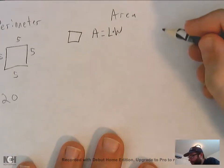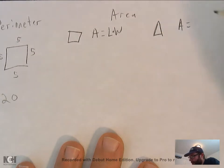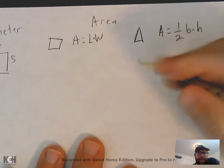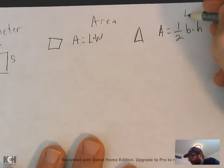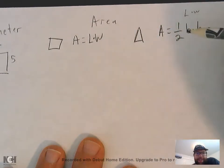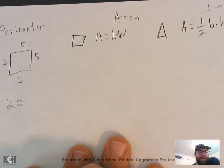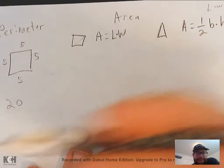And with triangles, the area is equal to one half times length times width, or base times height. It's usually referred to as base and height for triangles. You can also think of it as length times width — the idea is that if you take half a rectangle, you get a triangle. You just multiply those two sides and divide by two.